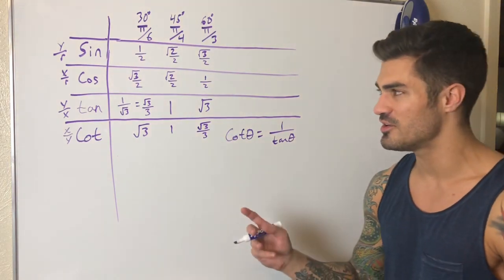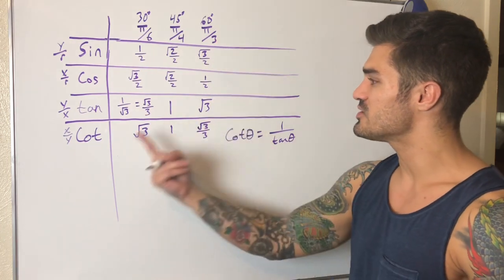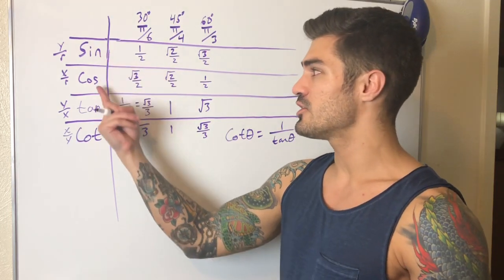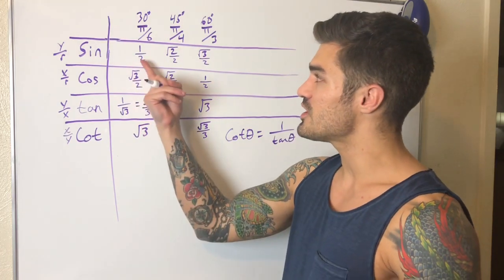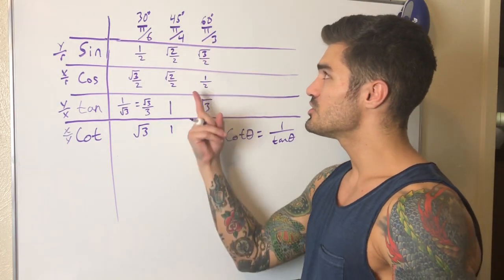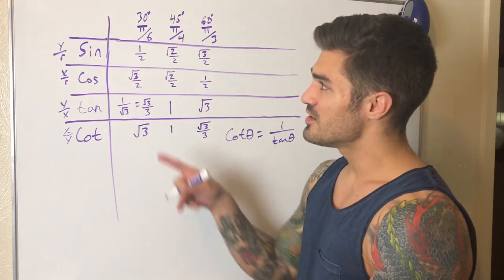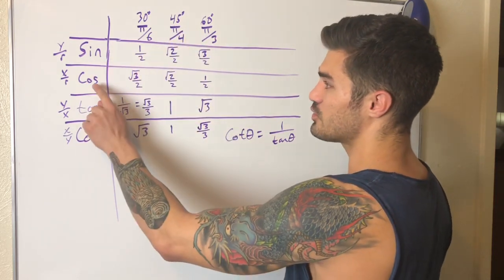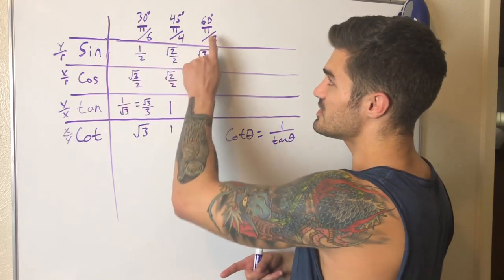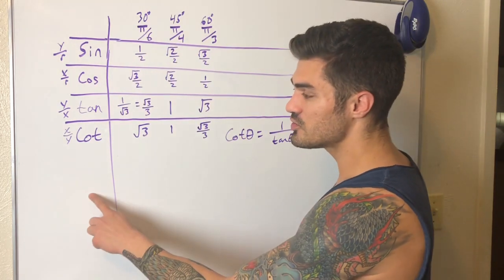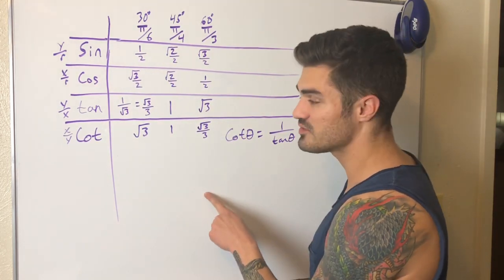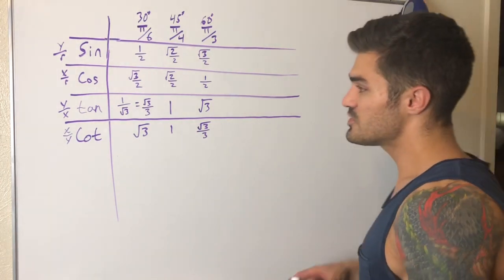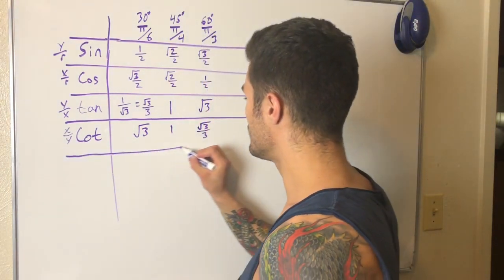There's actually a third way to think about this — there's a pattern. The tangent of 30° is the same as the cotangent of 60°. This is called a co-function identity. It applies to sine and cosine, tangent and cotangent, and secant and cosecant. Basically, two angles that add up to 90° will have matching function values: sin(30°) = cos(60°), sin(45°) = cos(45°), sin(60°) = cos(30°). The same will hold for secant and cosecant.